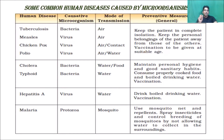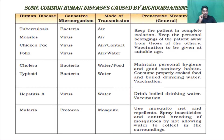What are the common human diseases caused by microorganisms? In Class 8 there is a chart which gives information about human diseases caused by microorganisms — I have taken it from the textbook itself. We have four segments: the disease caused in humans, the causative organisms, the mode of transmission, and the preventive measures to be taken.